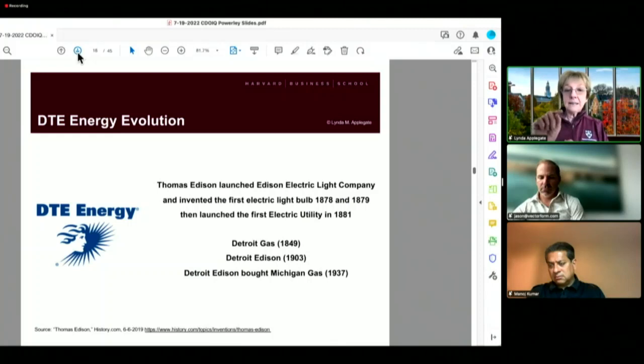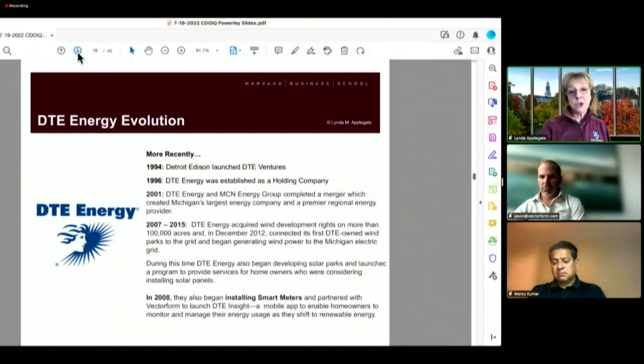Thomas Edison launched Edison Electric Light Company, invented the first electric light bulb in 1878, 1879. Then they launched the first electric utility in 1881. Detroit Gas was launched in 1849, Detroit Edison in 1903,